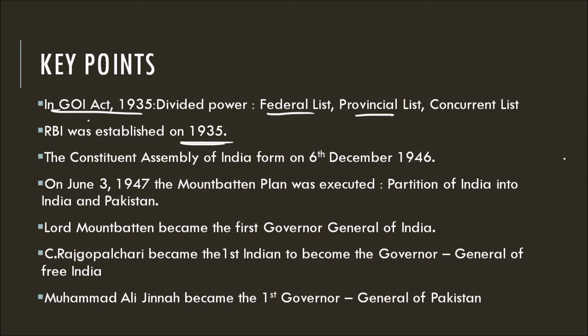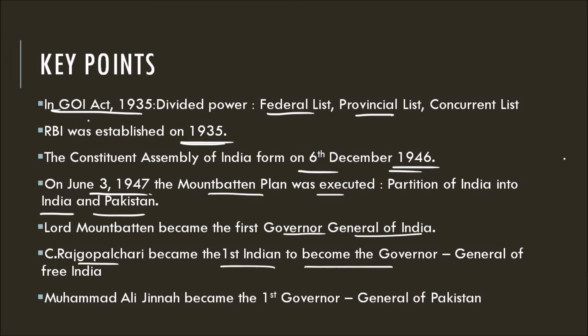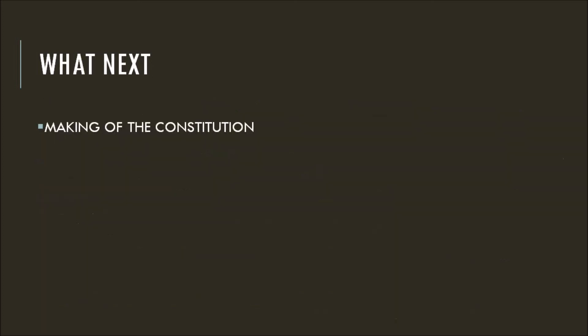The Constituent Assembly of India was formed on 6 December 1946. On 3 June 1947, the Mountbatten Plan was executed and India was partitioned into India and Pakistan. Lord Mountbatten became the first Governor-General of India. C. Rajagopalachari became the first Indian to become the Governor-General of Free India. Muhammad Ali Jinnah became the first Governor-General of Pakistan. In the next session, we will be discussing the Making of the Constitution. Thank you for watching and see you in the next one.